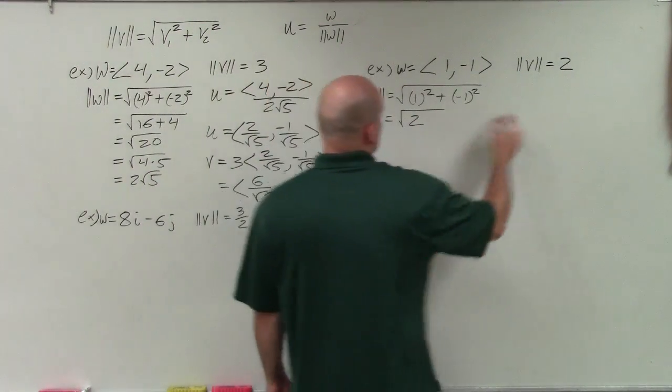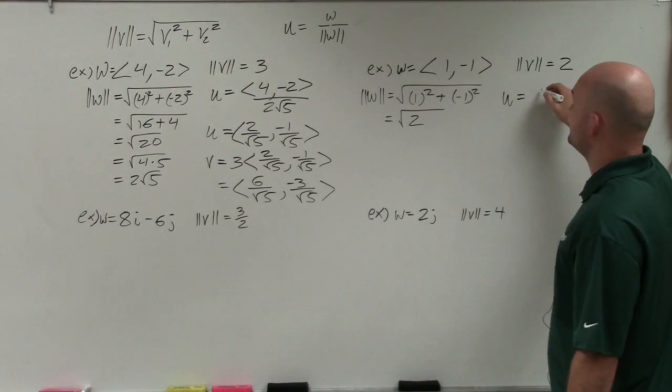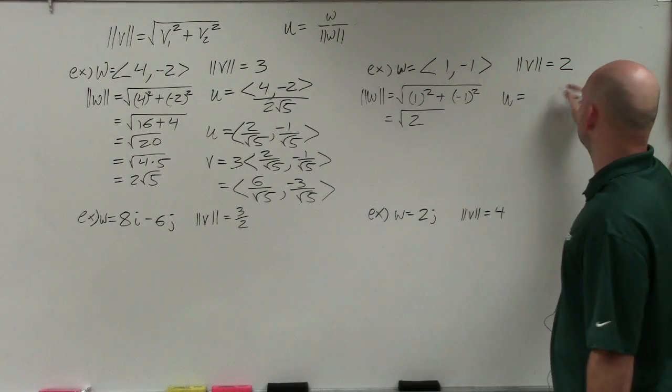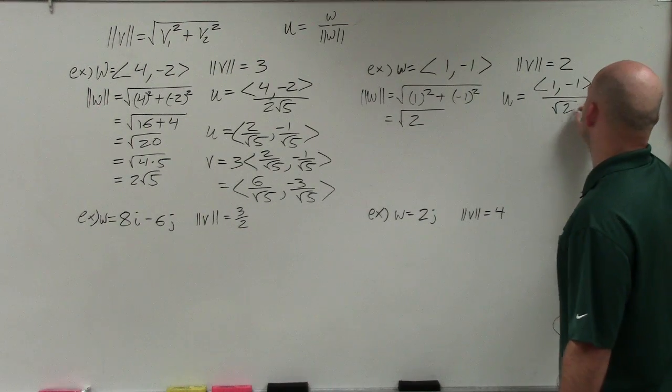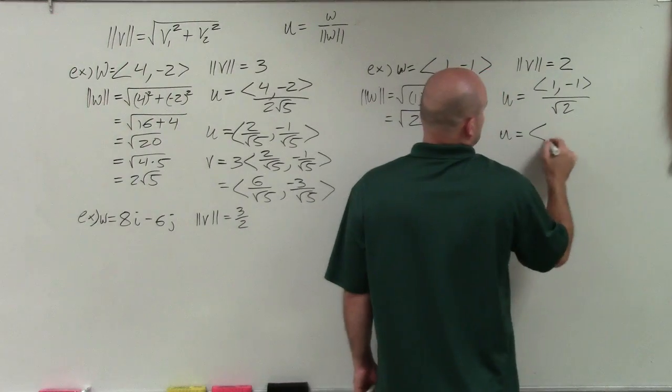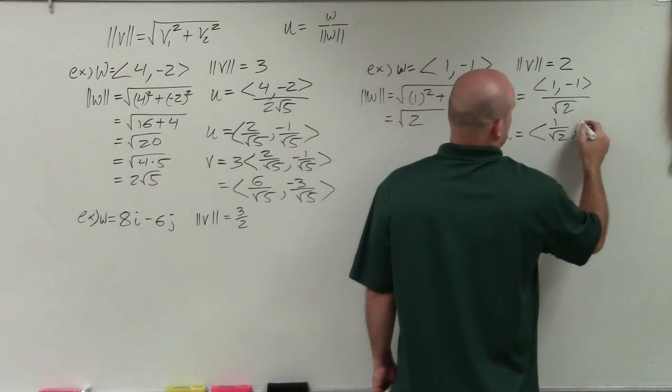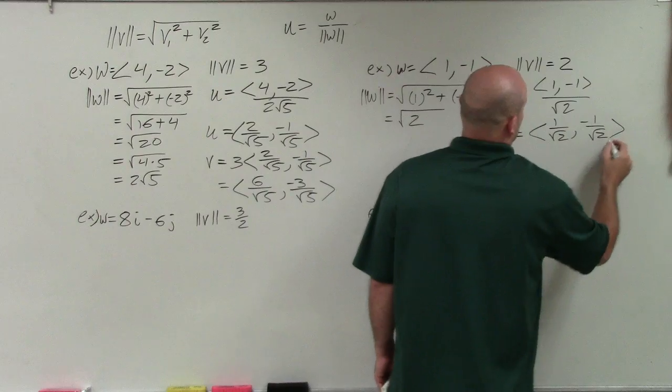Let's go ahead and find the unit vector u. So the unit vector is going to be my w, which is this vector 1 comma negative 1 over my magnitude. Simplify that: u is 1 over the square root of 2 comma negative 1 over the square root of 2.